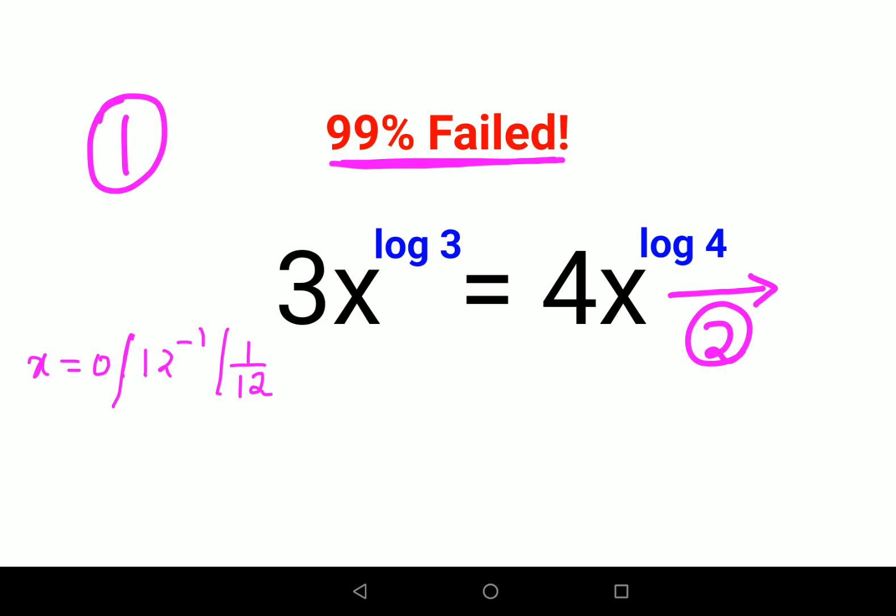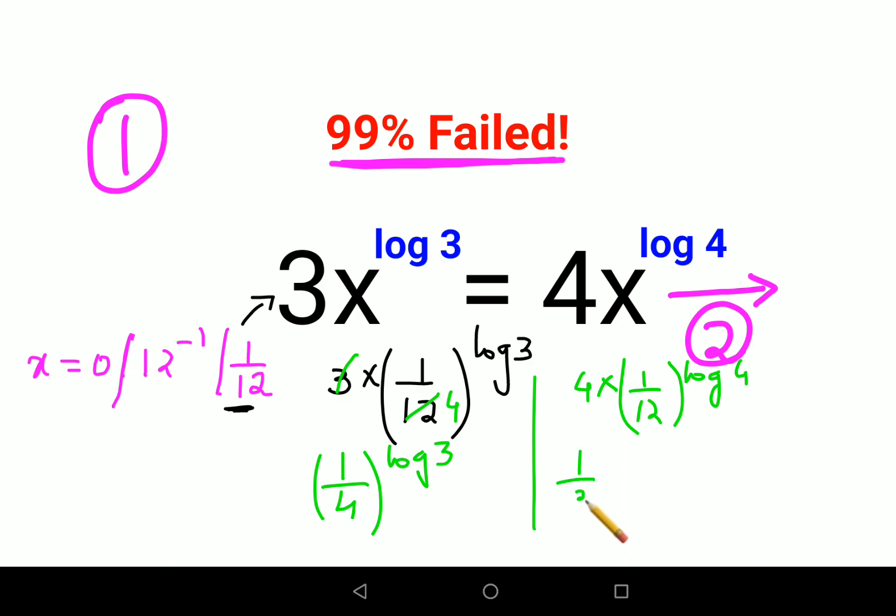So now let's put the value of x as 0. Once we put the value of 0, we realize that it is satisfying both the sides. Let's put the value of x as 1 upon 12 in this particular LHS. So we will have 3 into 1 upon 12 the whole raised to log 3. So this becomes 1 upon 4 raised to log 3. And here this will become 4 into 1 upon 12 raised to log 4, so this becomes 1 upon 3 the whole raised to log 4. And when you actually put this value in the calculator, you will realize they are very very close to each other.